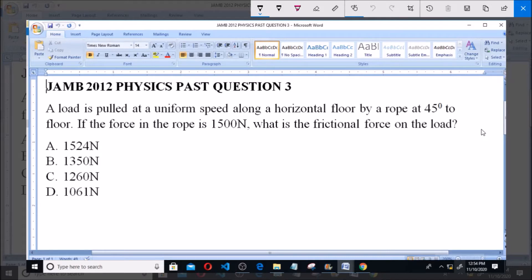A load is pulled at a uniform speed along a horizontal floor by a rope at 45 degrees to the floor. If the force in the rope is 1500 Newton, what is the frictional force on the load?